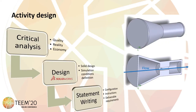The activity design is implemented in three different steps. The first step is the critical analysis. A critical analysis of the training requirements and the potential advantages of this activity has to be carried out based on three criteria established in the bibliography: quality, reality, and economy.